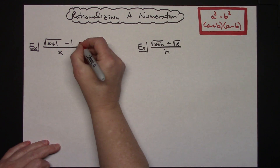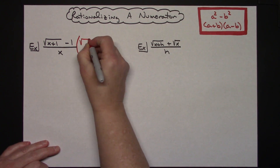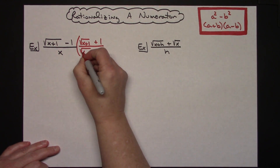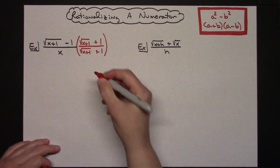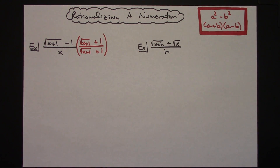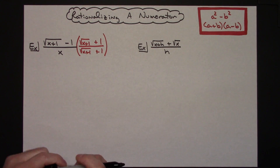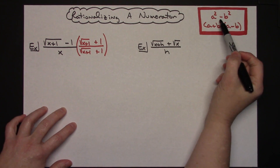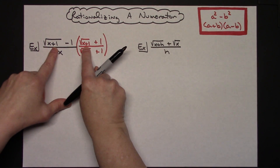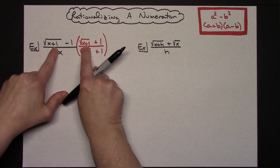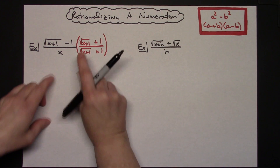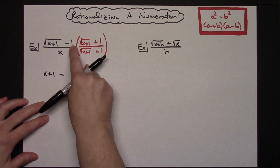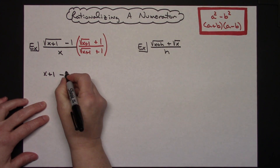In this first example, I'm going to multiply by the square root of x plus 1, plus 1, over the square root of x plus 1, plus 1. It's a form of 1, so I'm not altering anything. Now squaring the first term — multiplying two identical things under the square root just leaves what's underneath — so I get x plus 1. Then a minus sign, and squaring the second term, 1 times 1 gives me a 1.